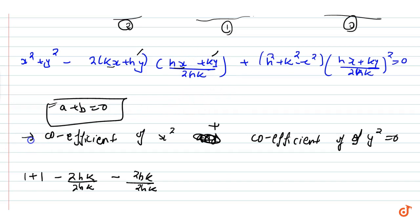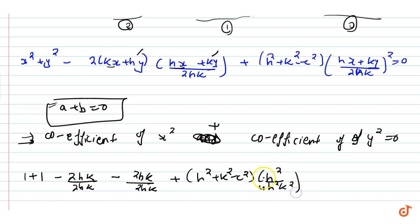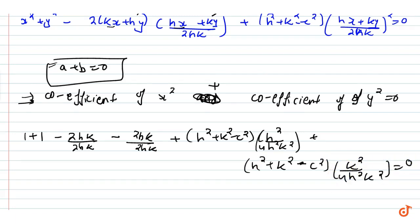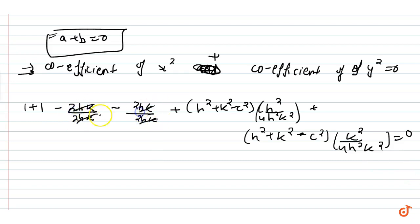The x² term from the last part gives h² plus k² minus c² times h² divided by 4h²k², and the y² term gives h² plus k² minus c² times k² divided by 4h²k². Adding all x² and y² coefficients and simplifying, the 4h²k² denominator cancels, leaving 1 plus 1 plus h² plus k² minus c² all equal to zero.